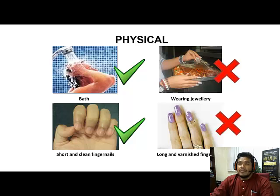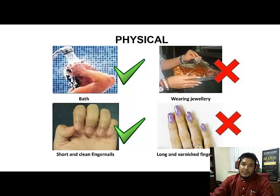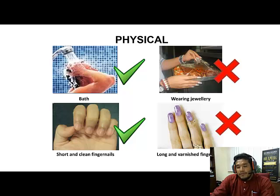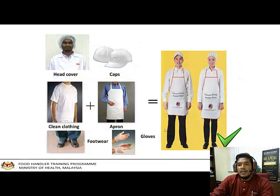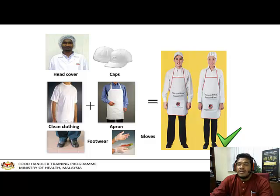In some cases, jewelry has dropped into food, which is definitely a big no when you are serving people — having something physical and inedible inside food is unacceptable. Long and varnished fingernails are also not allowed. If you look at this picture, it looks very clean — this is what we hope all food handlers will look like: not just appearing clean but actually being clean.